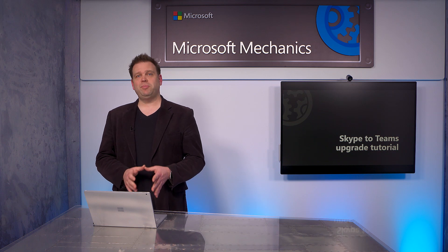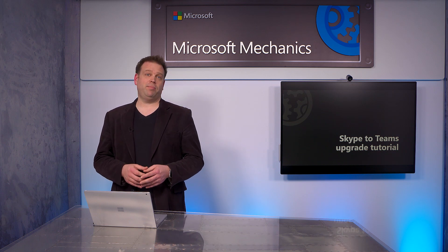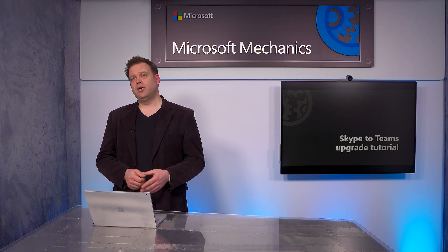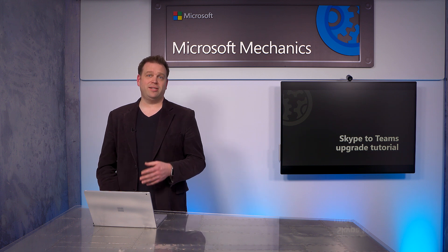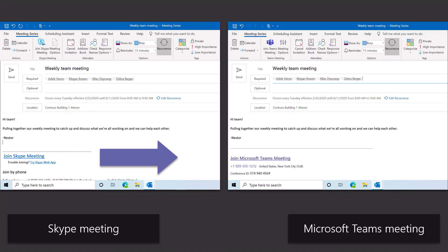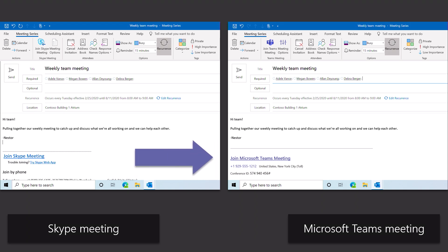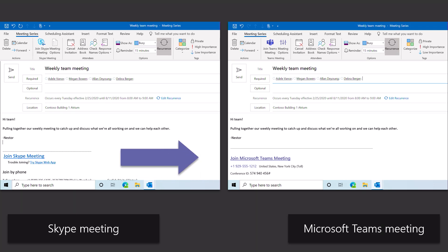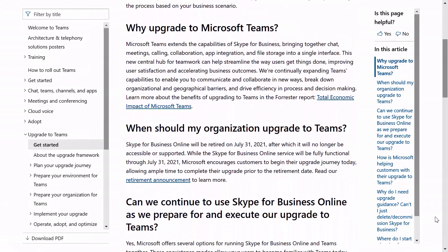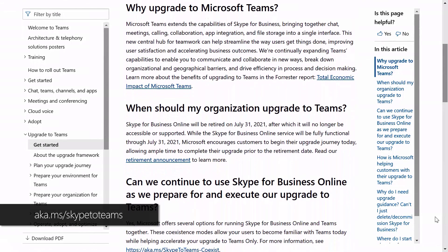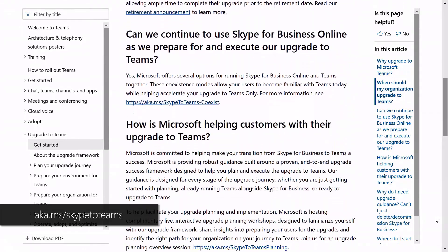Another tool in your tool belt is the built-in meeting migration service. This service is invoked behind the scenes as you modify per-user coexistence modes, or you can trigger it via PowerShell as a point-in-time configuration. It migrates Skype for Business meetings into Teams meetings by replacing the meeting cards with Teams details. For more technical reference, check out aka.ms/SkypetoTeams.